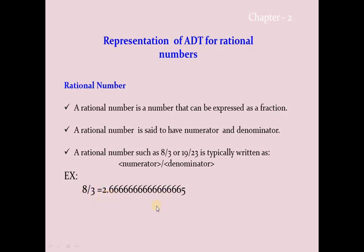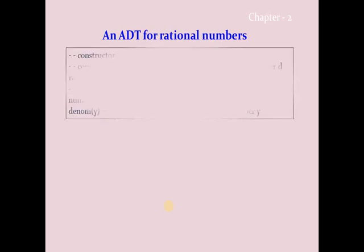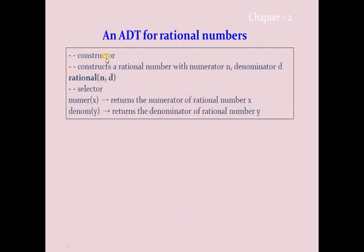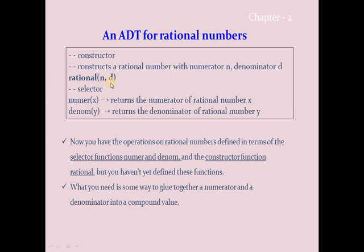In the example 8/3, 8 is the numerator and 3 is the denominator. Now we are going to implement this concept in abstract data type. To define abstract data type we need constructor and selector. The constructor name is `rational` and it has two parameters n and d. The selectors are `numer(x)` and `denom(y)`.